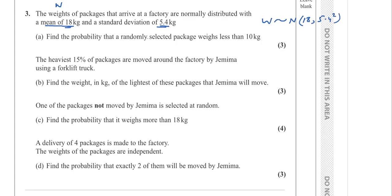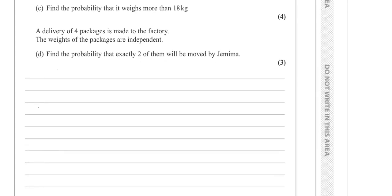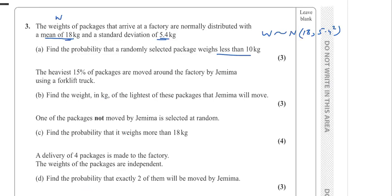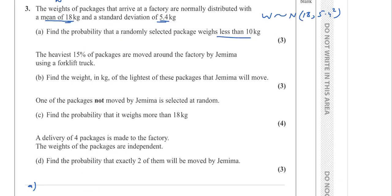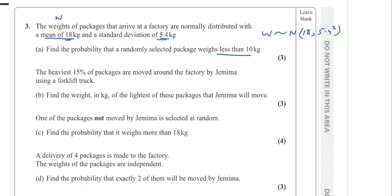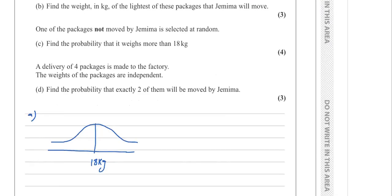Part A: find the probability that a randomly selected package weighs less than 10 kg. We can show the normal distribution as a bell curve — a normally distributed curve with mean 18 kg and standard deviation 5.4 kg. We need to find the probability for the region less than 10 kg.